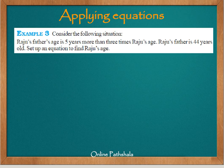Now let us look at some examples where we apply equations. The example here is Raju's father's age is 5 years more than 3 times Raju's age. Now Raju's father is 44 years old. Set up an equation to find Raju's age. Now if we read this statement carefully we say that Raju's father's age is 5 years more than 3 times Raju's age. So we know that Raju's father's age is 44 years here.